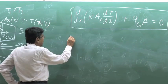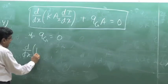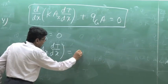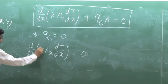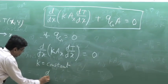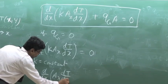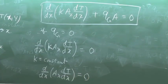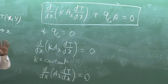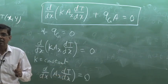Without heat generation, the quantity d/dx of (K·A(x)·dT/dx) equals zero. If we additionally take K as constant, we arrive at: d/dx of (A(x)·dT/dx) = 0. Even then, we cannot say dT/dx is constant or that temperature is linear, because we are still accounting for the variation of area. Only if the area variation is absent — as in a plane wall — does A(x) come out and we get d²T/dx² = 0, giving a linear temperature variation.